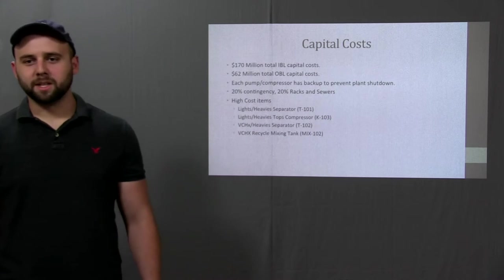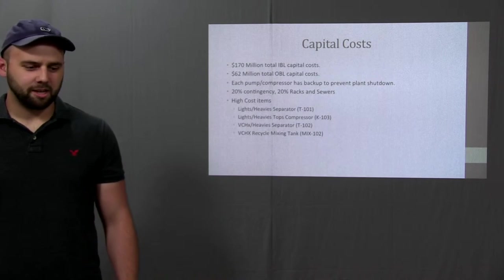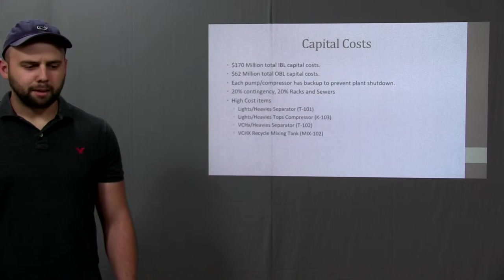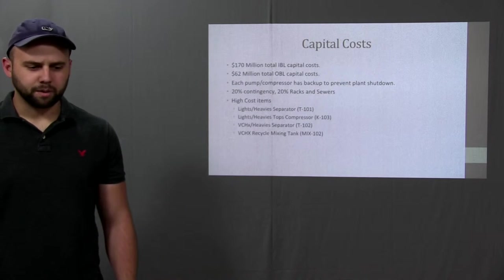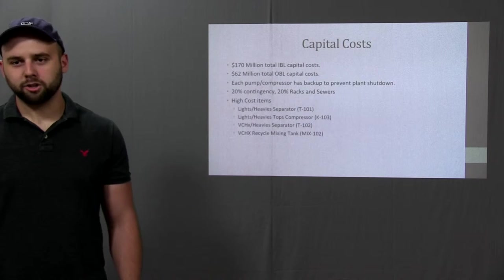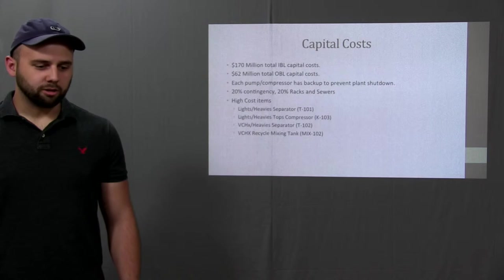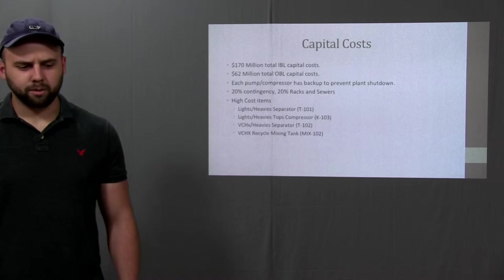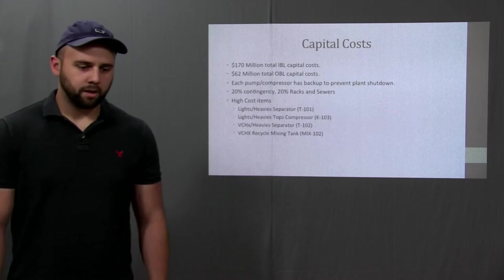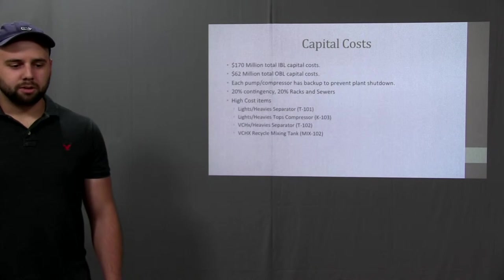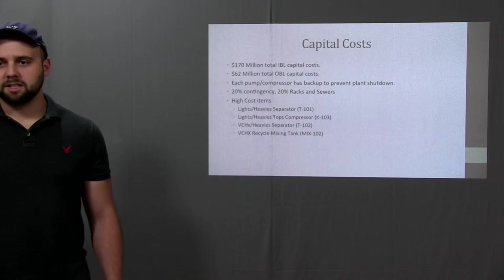Hi, I'm Kyle and I'll be talking about some of the economics of our process today. First off, capital cost. Total IBL capital cost including all types of equipment inside the factory is about 170 million. Total OBL capital cost including everything outside the process equipment is 62 million.